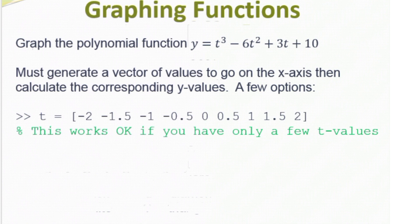Now we're going to take a look at graphing functions. We want to graph this polynomial function: y equals t cubed minus 6t squared plus 3t plus 10. The very first thing I'm going to do is generate a vector of the x-coordinates of the points, and then I'm going to plug those x-coordinates into the equation to generate a vector of y-coordinates. We have several different methods for generating a vector of points. First, I can enter all the points in manually — works great if you only have a few t values, not so good if you want to plot many values.